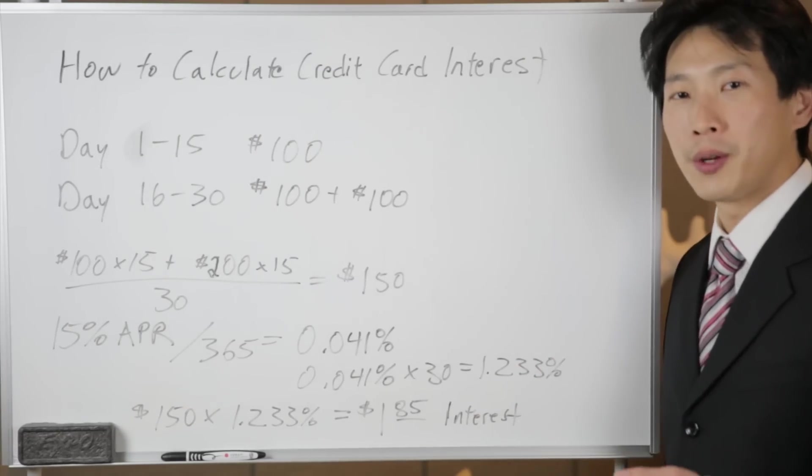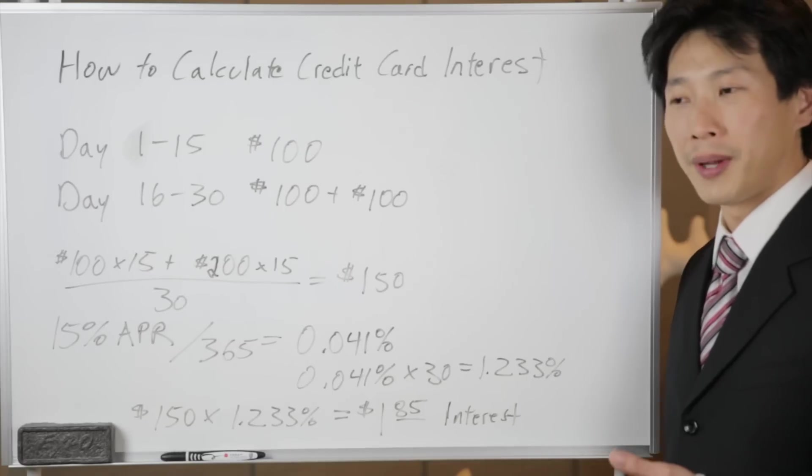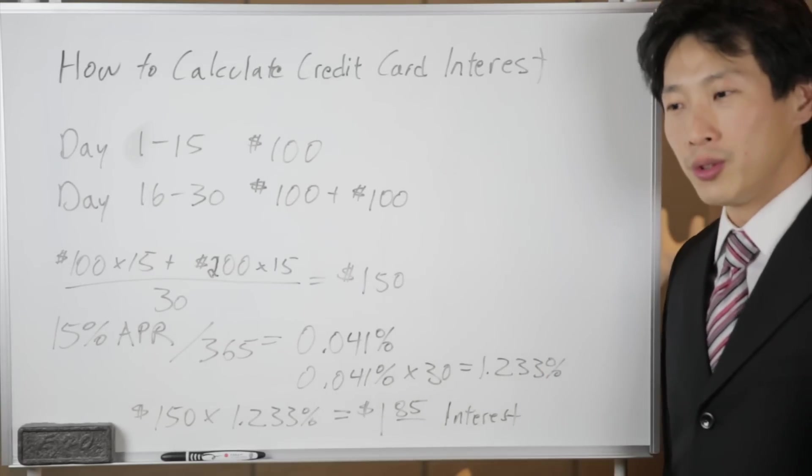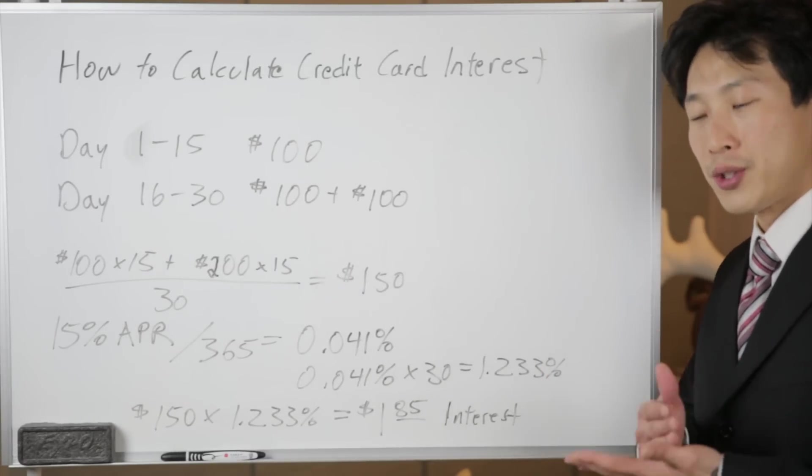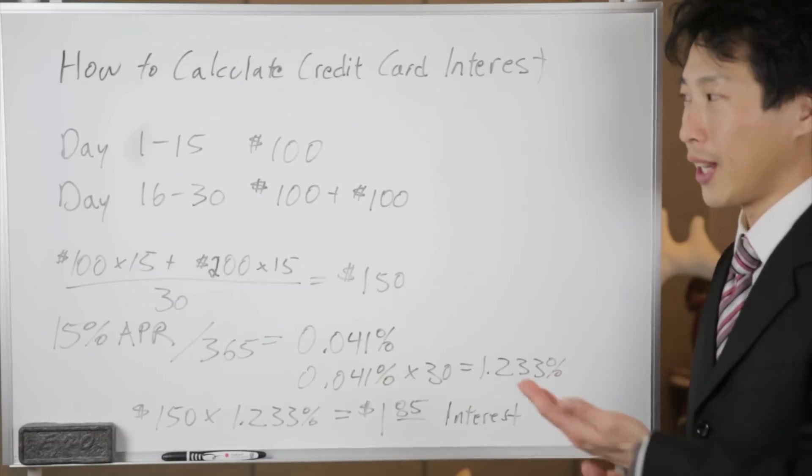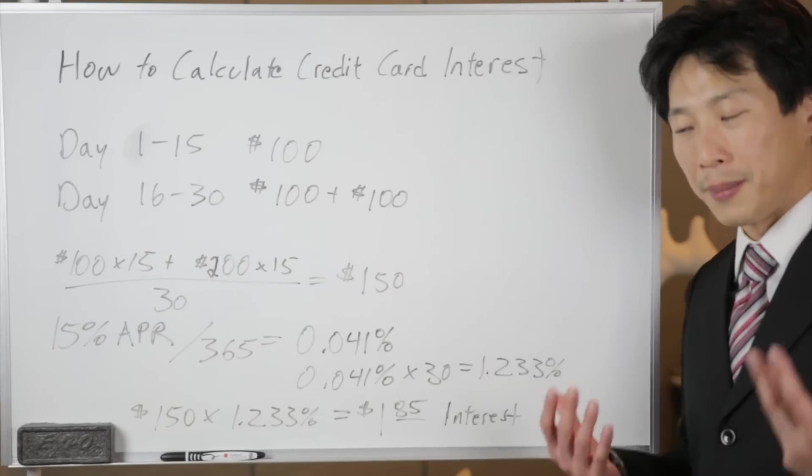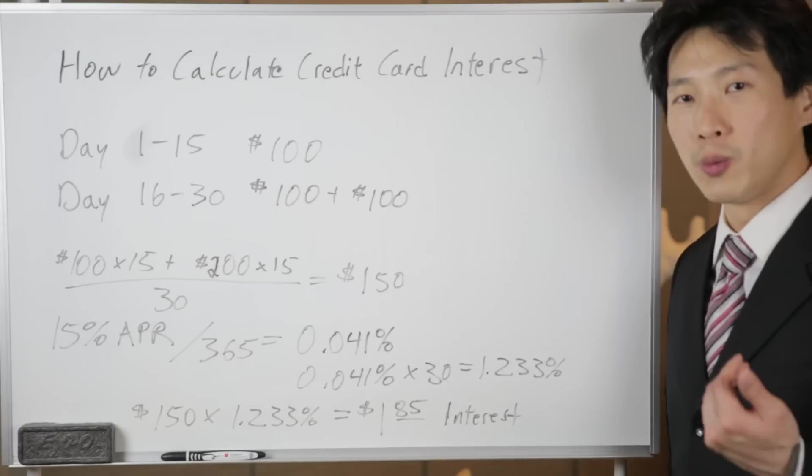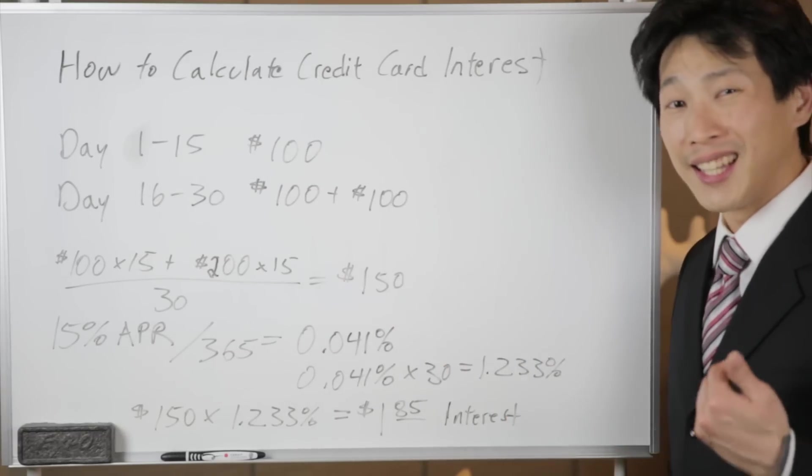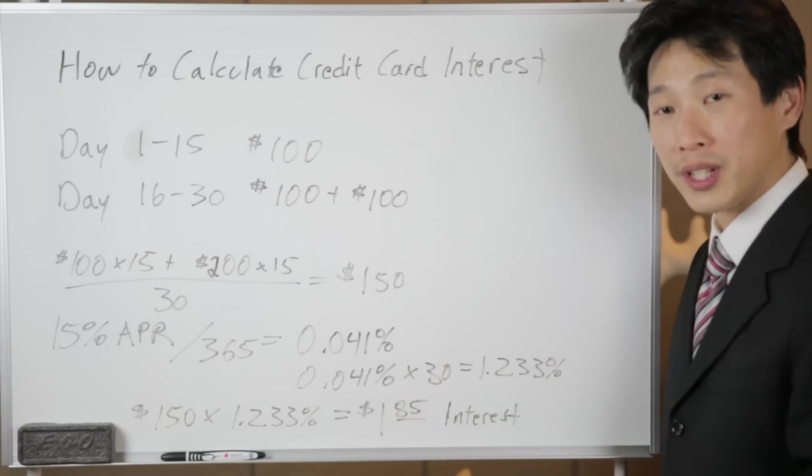So for example you may want to do two payments a month where the first payment is after your first paycheck, and you pay some amount, maybe half of it already. Then you would essentially reduce your average daily balance and in essence reduce the total interest that you pay.